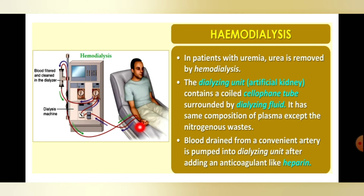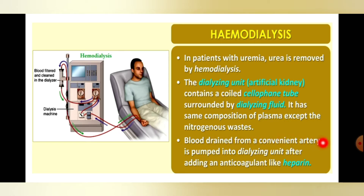Here you can see the person connected — arteries and veins are connected to the machine. Blood is drawn out through the artery and fed into the dialyzing unit, which is the dialysis machine. Inside the dialyzer the blood is filtered and cleaned, then sent back to the patient.